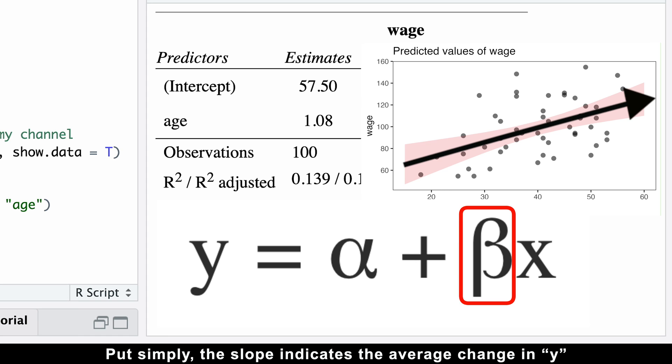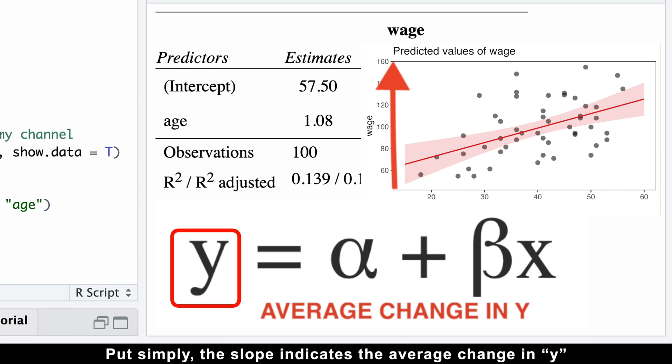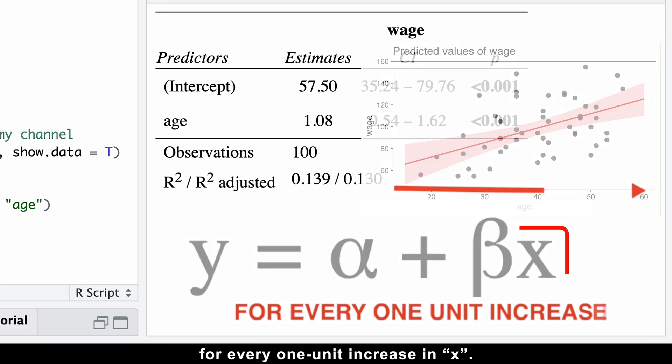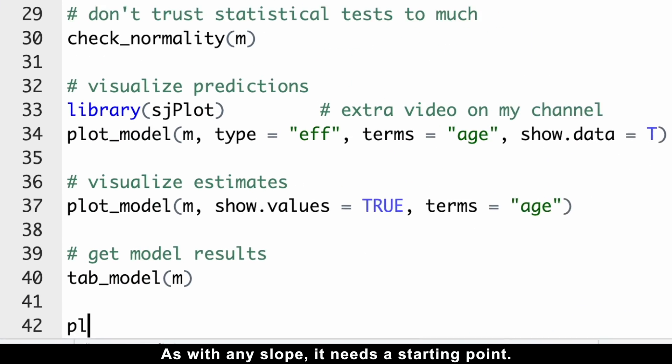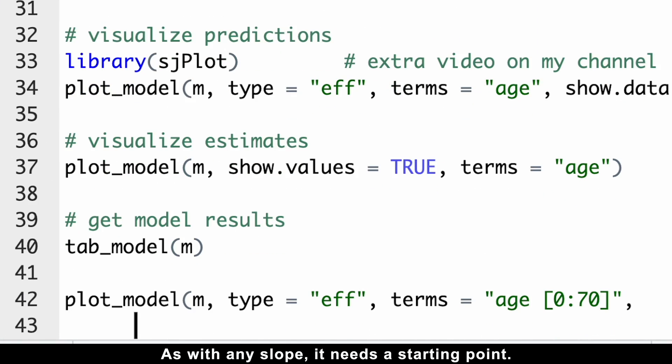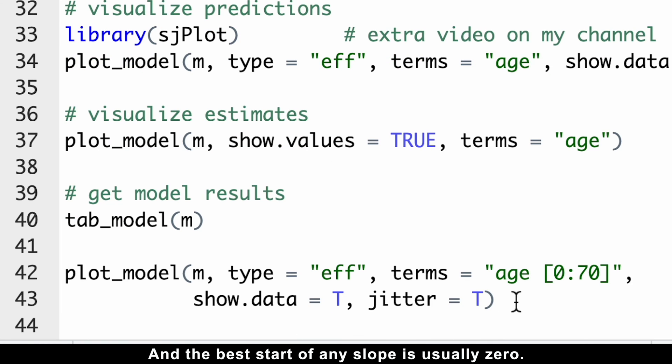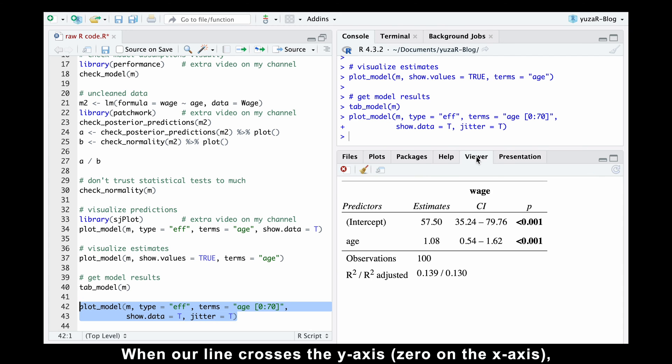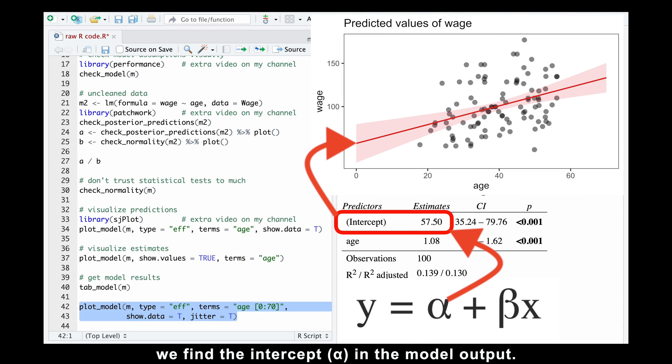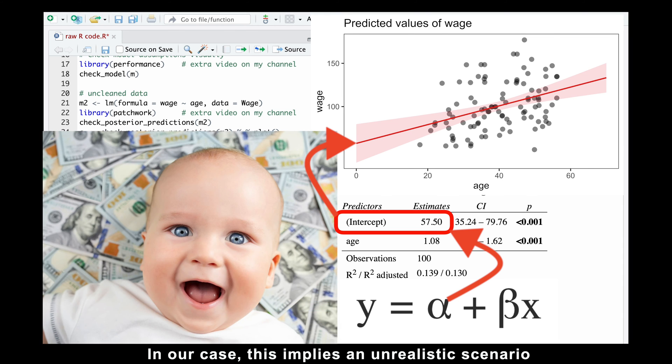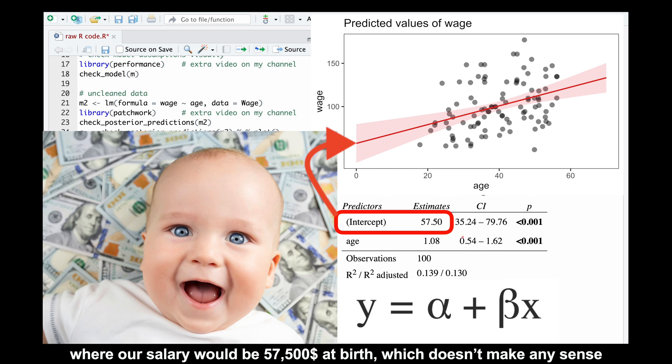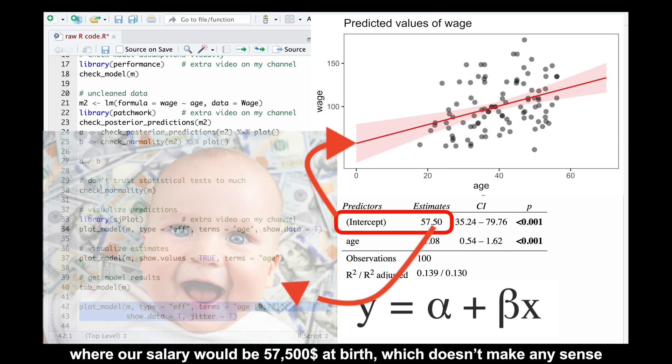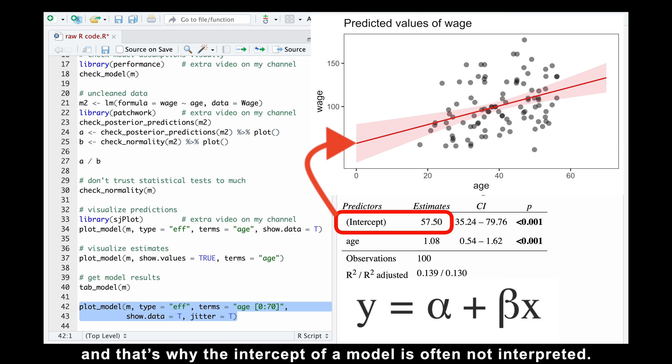The model indicates that there is a 95% chance that the salary increase falls within this interval. That's why it's called the 95% confidence interval. If this average annual increase of $1,080 occurs consistently, we obtain the slope of the line, represented by the beta coefficient in the model formula. Put simply, this slope indicates the average change in y for every one unit increase in x. As with any slope, it needs a starting point, and the best start of any slope is usually zero. When our line crosses the y-axis, we find the intercept alpha in the model output. In our case, this implies an unrealistic scenario where our salary would be $57,000 at birth, which doesn't make any sense, and that's why the intercept of a model is often not interpreted.